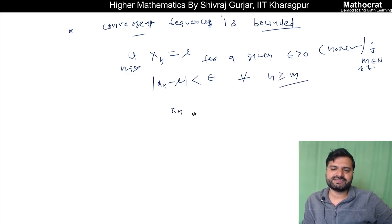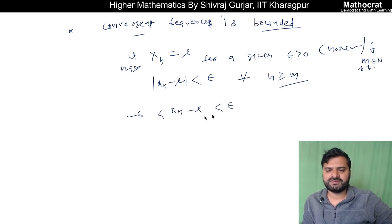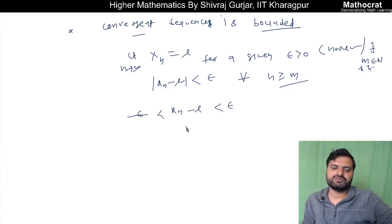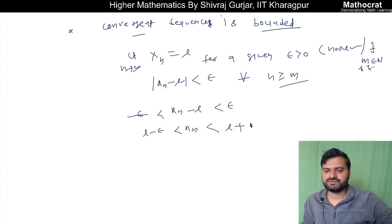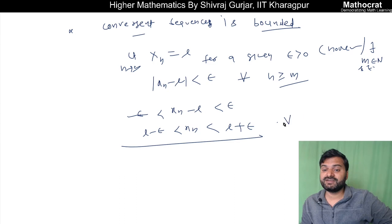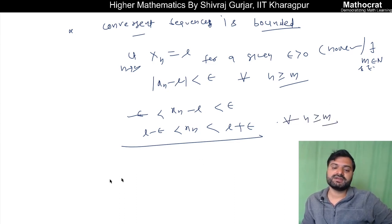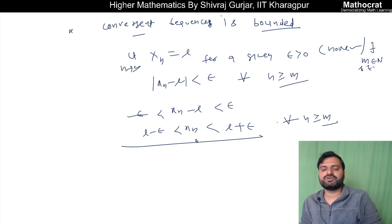So this means xn minus L lies between minus epsilon and epsilon, or we can say xn will lie between L minus epsilon and L plus epsilon. This inequality is valid for n greater than or equal to m only. So we need to show that xn is bounded.